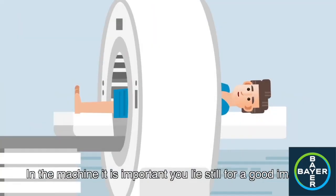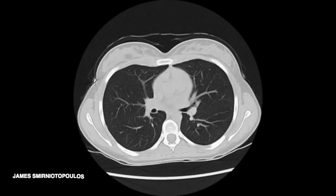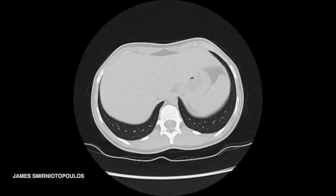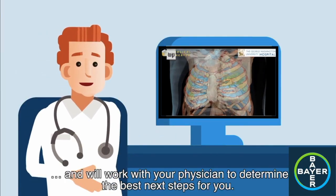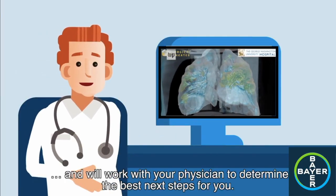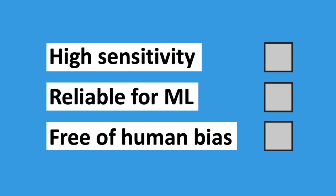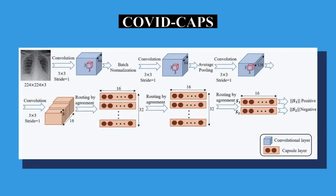The CT scan is an imaging test that takes a series of cross-sectional X-rays. The machine rotates around the patient to obtain 2D images to form a 3D representation of the body. CT scans have high sensitivity and are a reliable method for machine learning since it is independent of the operator's experience. Deeming PCR insufficient, the need for improved diagnosis capabilities arises.